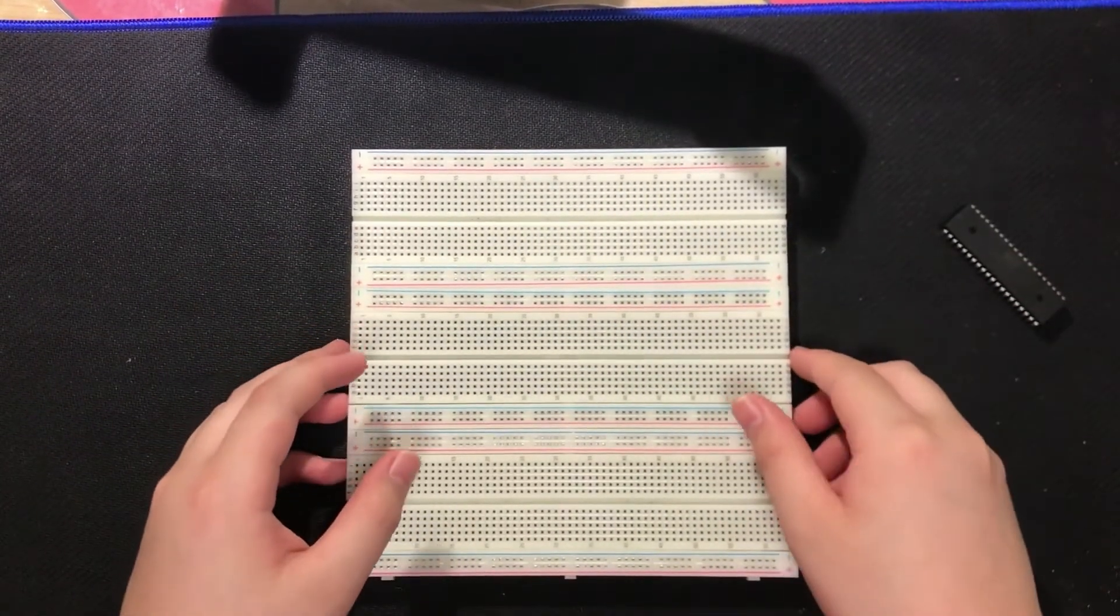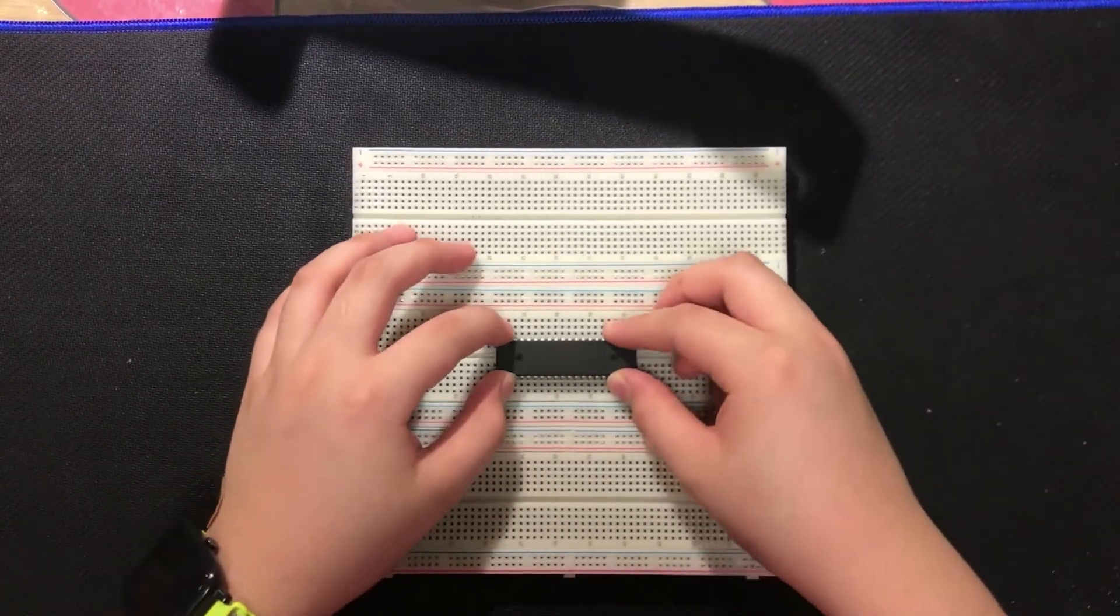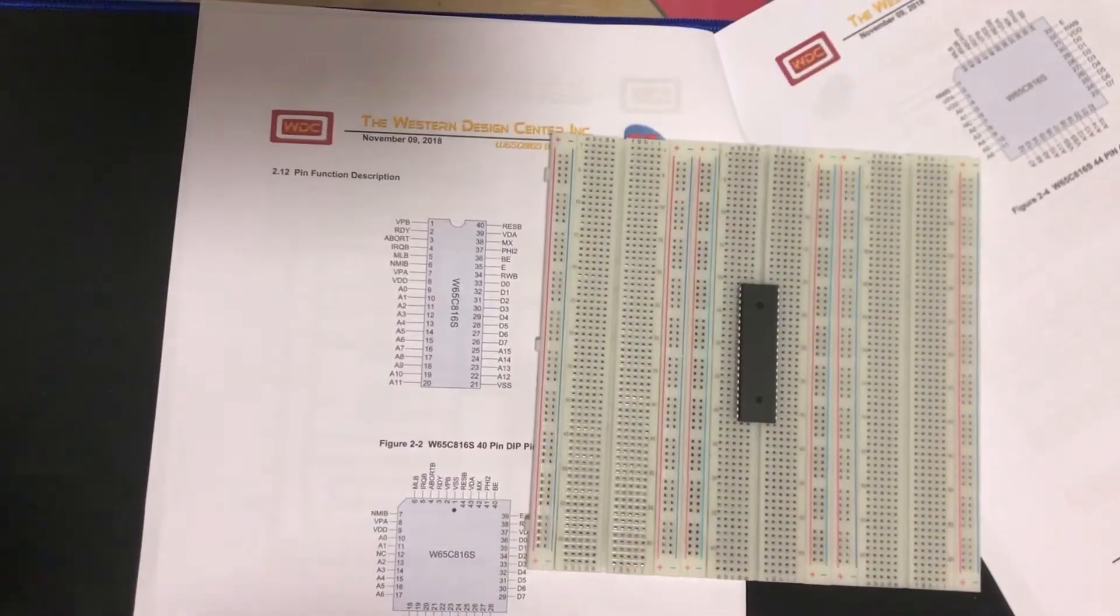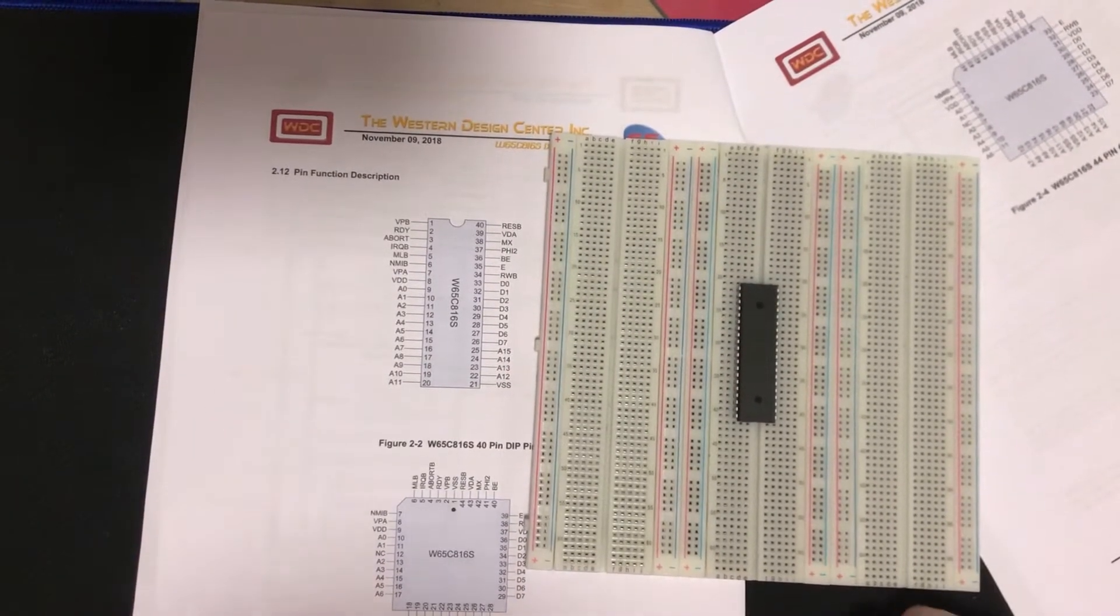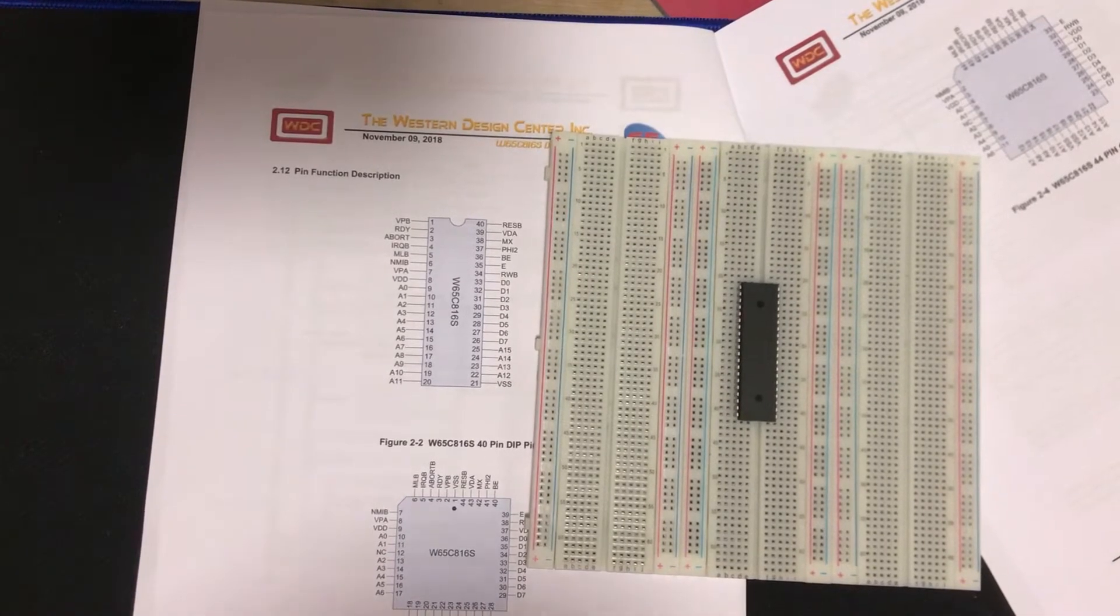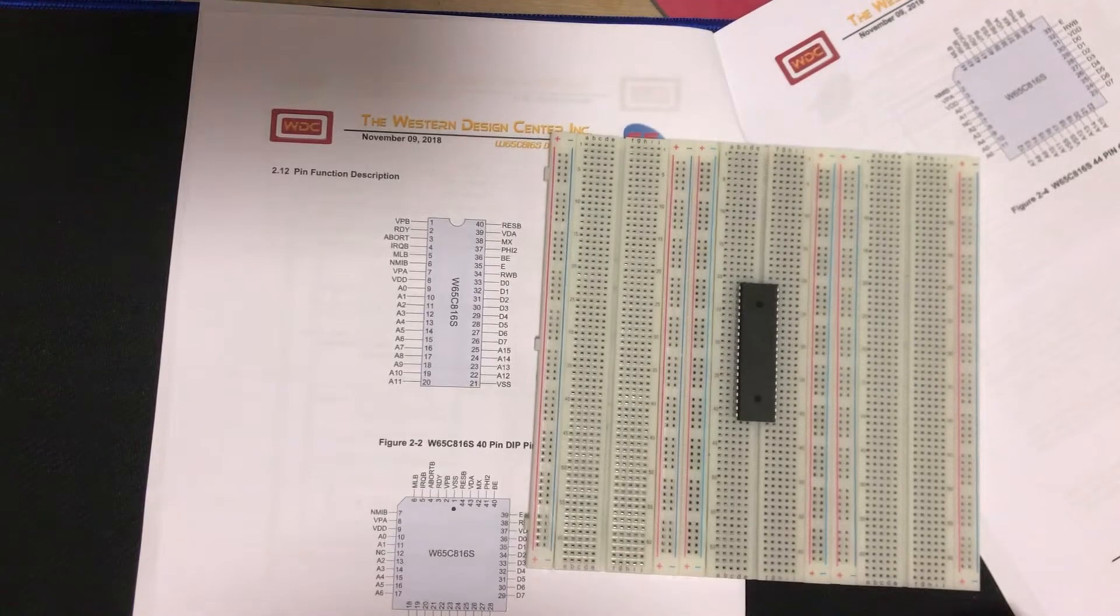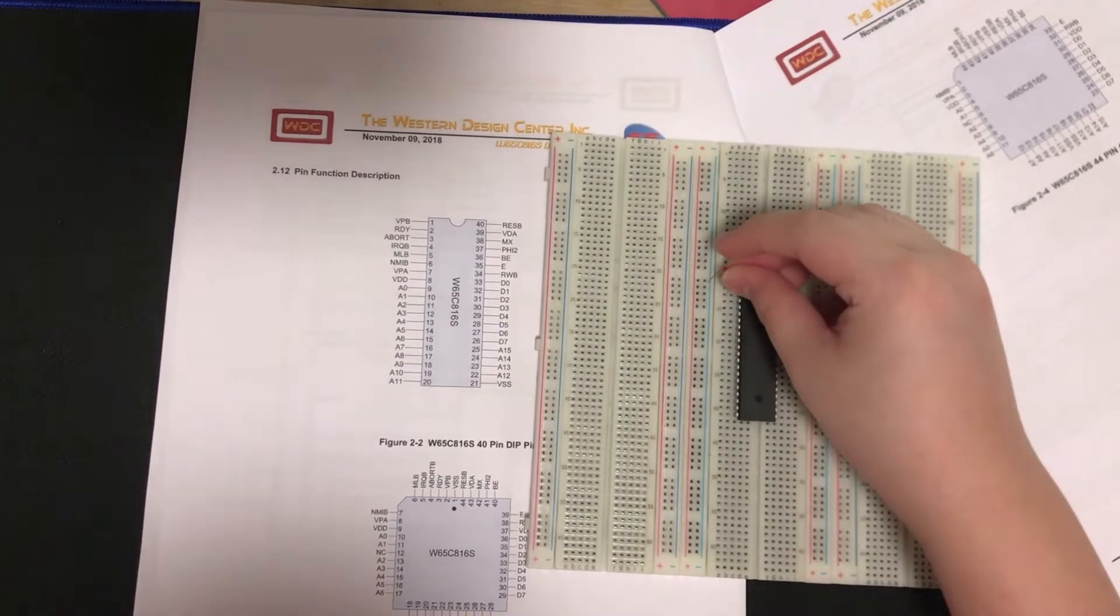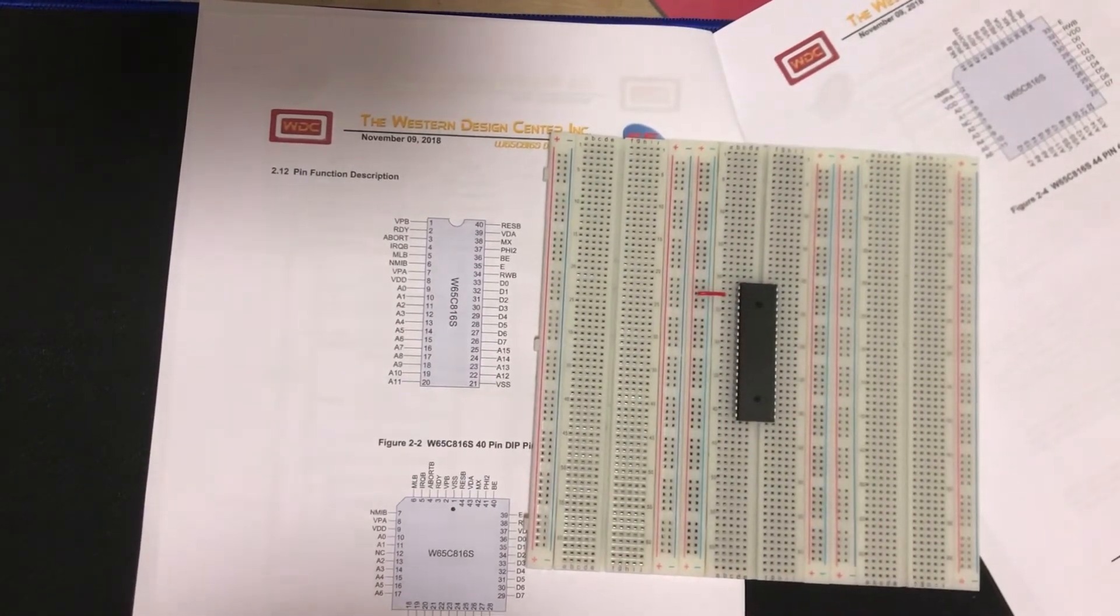I've got three breadboards here, which hopefully should be enough. We're going to plug the W65C816 on the middle of the breadboard. The first pin is vector pull. This is an output pin, just like on the W65C02, so we don't need to care about this. Next pin is the ready pin. Just like the 6502, this is used to signal the microprocessor that it's ready to execute instructions. For now, we're going to tie that high so the processor is ready to execute instructions.